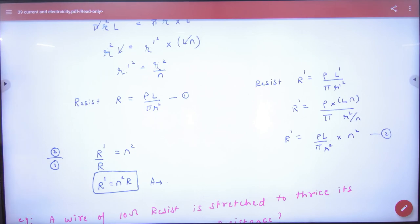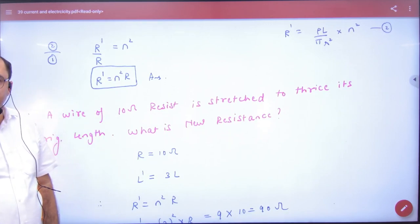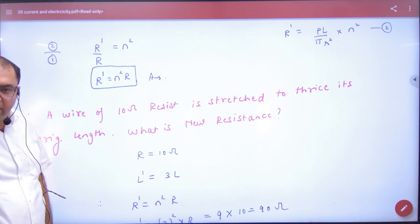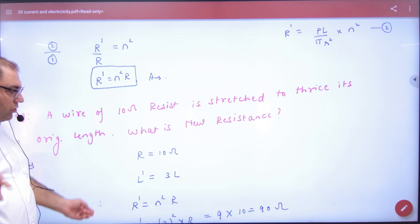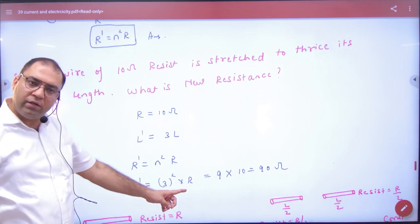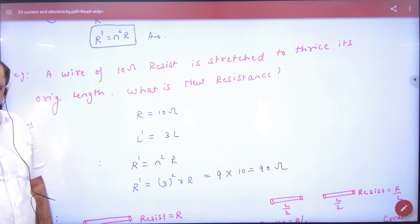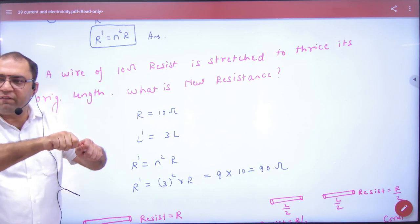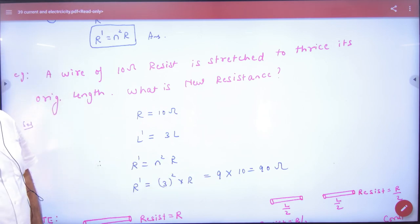So write this formula. As the question comes, a wire with resistance 10 Ohm is stretched to thrice its original length. So what is n? 3. So what will be resistance? n² into R. 3² into R. 9 into R. Answer. In the objective, we will put a straight formula. If the wire stretched, the resistance will be n². This is the first type of question.